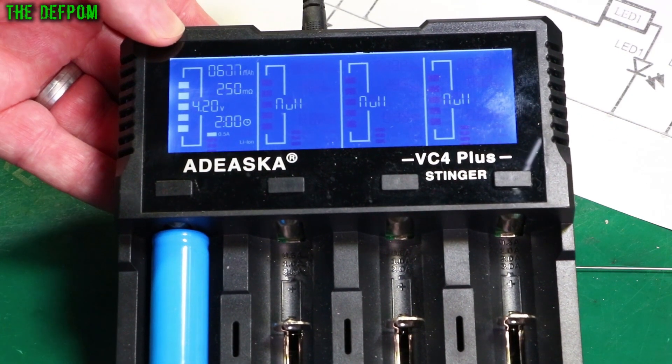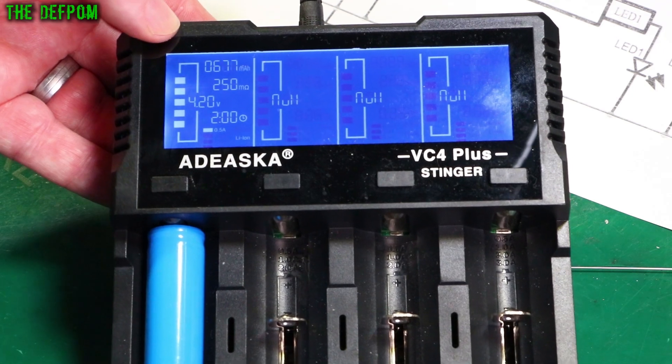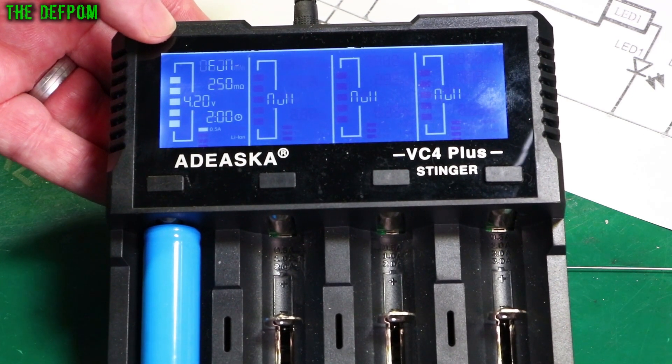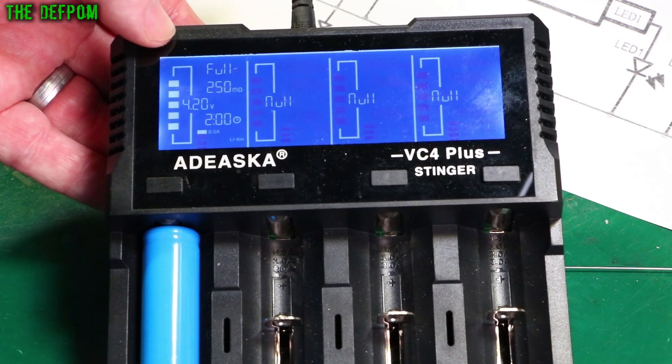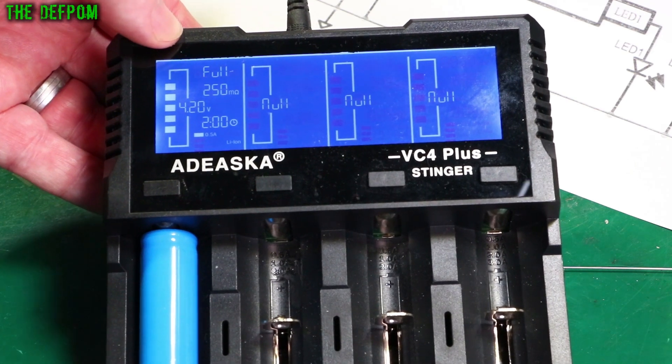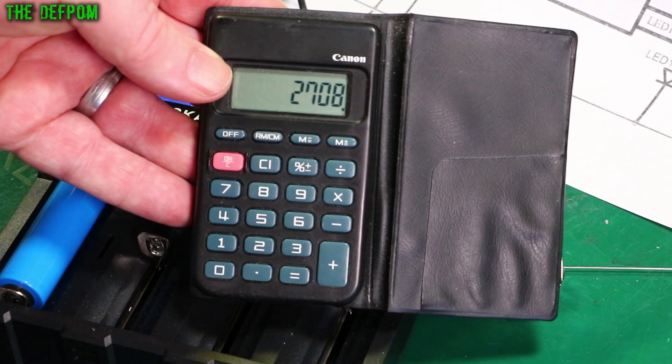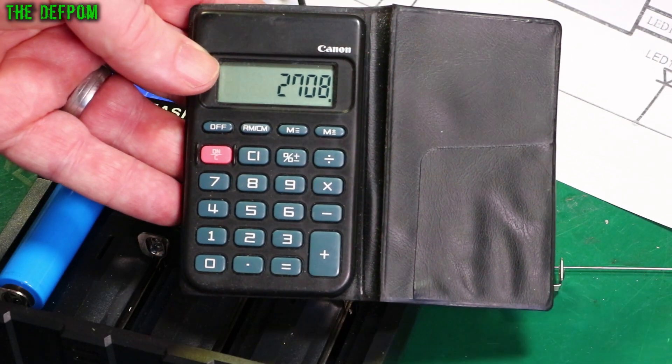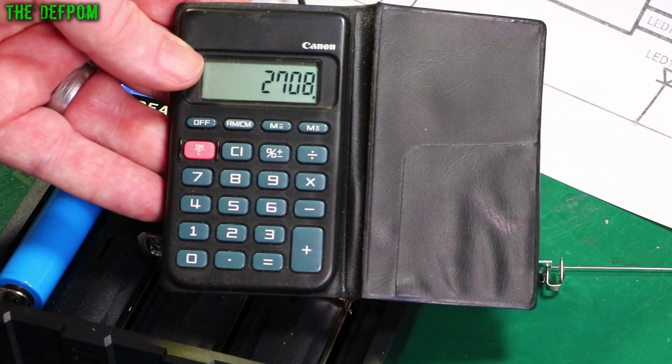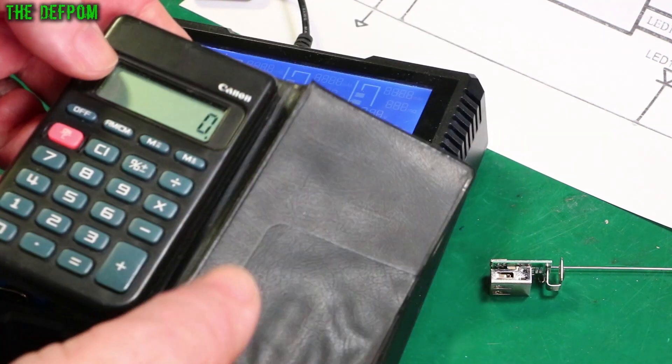Well, here we go, there's the result of a full charge, 677 milliamp hours. That's 2000 milliamp hours short of what it claims. And I estimated about a quarter of the size. What's 4 times 677? There you go, 2708. I was right, it's one quarter of the size it should be. That was a good guess, wasn't it?